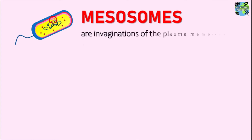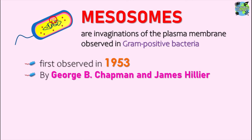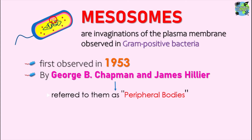These mesosomes are the invaginations of the plasma membrane or cytoplasmic membrane, which are primarily observed in the gram-positive bacteria. They are more prominent in gram-positive bacteria. It was first observed in 1953 by George Jumpman and James Hillier, who first observed them in the bacterial cell. And these were known as the peripheral bodies.